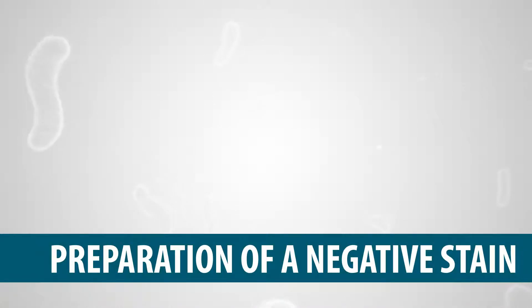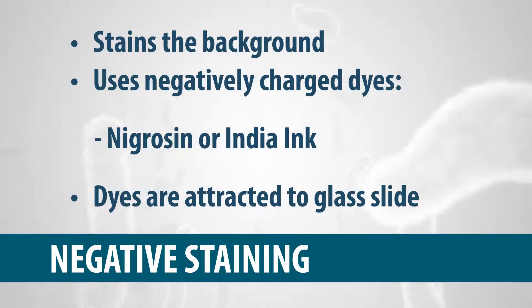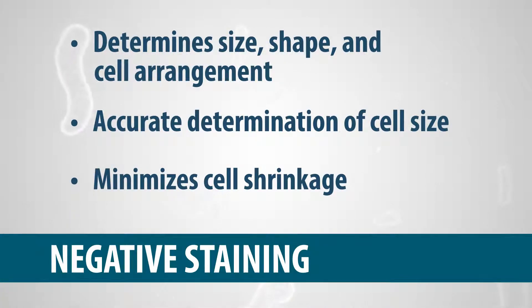Preparation of a Negative Stain. In negative staining, the background is stained, leaving clear cells visible against a dark background. Negative staining uses negatively charged dyes, such as nigrosine or India ink, both of which are repelled by the negative charge of the bacterial cell, but are attracted to the glass slide. Negative stain is used to determine the size, shape, and cell arrangement of a particular bacterium. One advantage seen with negative staining is a more accurate determination of the size of a bacterial cell. Because negative staining uses no heat, cell shrinkage is minimized or eliminated.